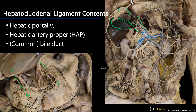Another major content of the hepatoduodenal ligament is the hepatic artery proper. That hepatic artery proper is going to branch into right and left hepatic branches, and we're going to have the cystic artery coming off typically that right hepatic branch. And finally, last but not least, is going to be the common bile duct. The common bile duct comes up and at this point it's going to receive the cystic duct and the common hepatic duct. So we have the common bile duct, the hepatic artery proper, and the hepatic portal vein all within the hepatoduodenal ligament.